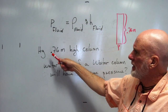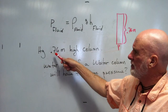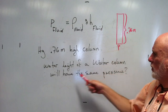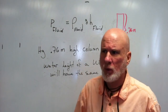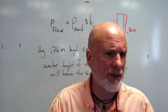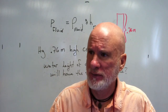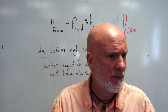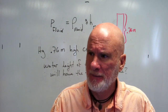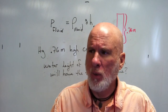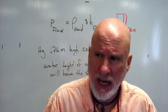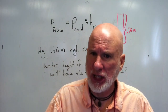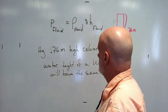and the height of the mercury column is 0.76 meters, what height of a water column will have the same pressure? Does anybody have a clue? Well, what would be the pressure of a column of mercury that's 0.76 meters tall, and how would you get it?